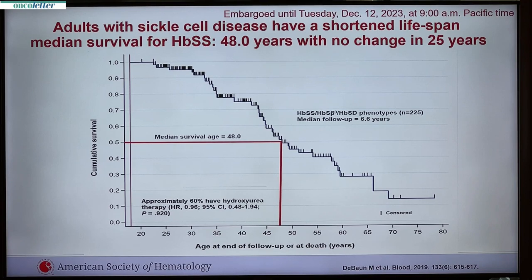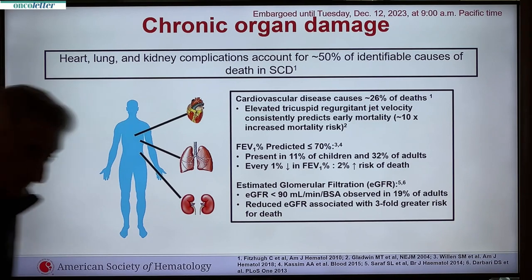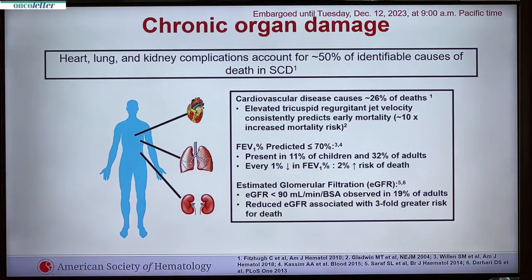If you look at the Kaplan-Meier curve, with cumulative survival on the y-axis and age at end of follow-up or death on the x-axis, you can see that the slope just keeps dropping after childhood. It is now clear that heart, lung, and kidney complications account for over 50 percent of identifiable causes of death in sickle cell disease. Cardiovascular disease causes about 26 percent of deaths, and elevated tricuspid regurgitant jet velocity consistently predicts late mortality — about 10 times the increased mortality risk.